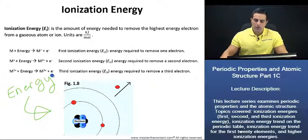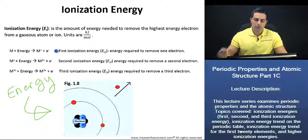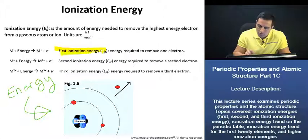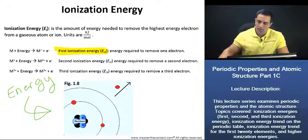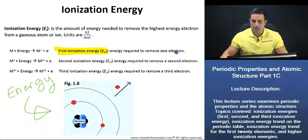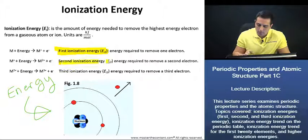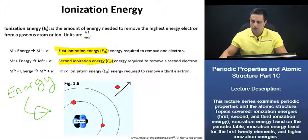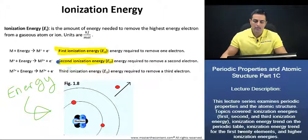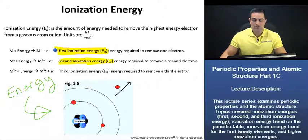One other thing that we should note is the amount of energy required to remove that first electron — that's known as your first ionization energy, the energy required to remove one electron. The amount of energy required to remove that second electron is known as your second ionization energy, and so on for the third ionization energy. Furthermore, the second ionization energy is always going to be higher than the first ionization energy because it's harder to remove that second electron, and we'll discuss why in just a few slides.